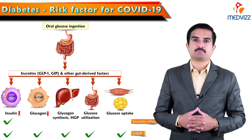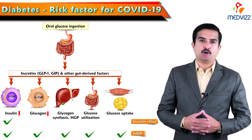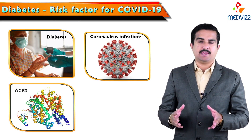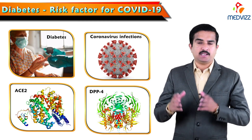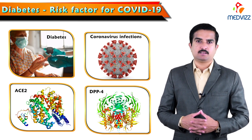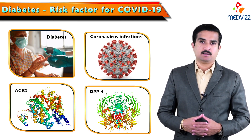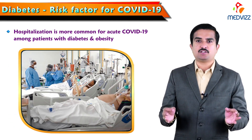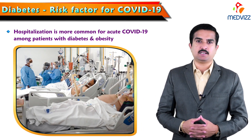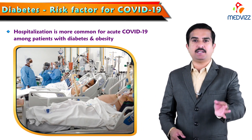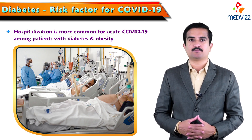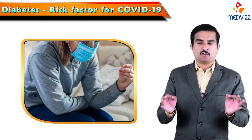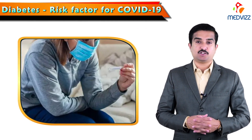After discussing these points, the relationship between diabetes, coronavirus infections, ACE2, and DPP4 has been explained by recent studies, and important clinical conclusions have been made. Hospitalization is more common in acute COVID-19 among patients with diabetes and obesity because of all these factors.